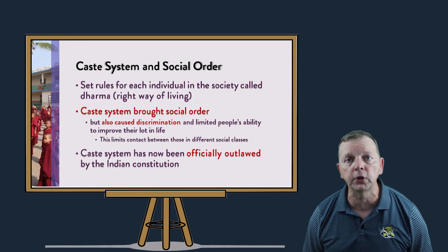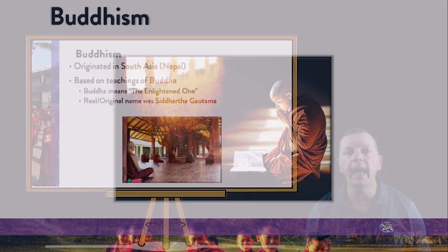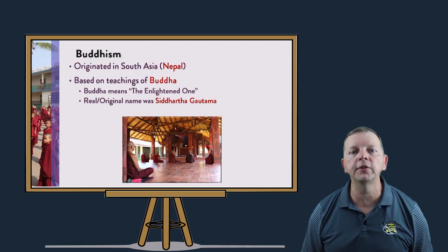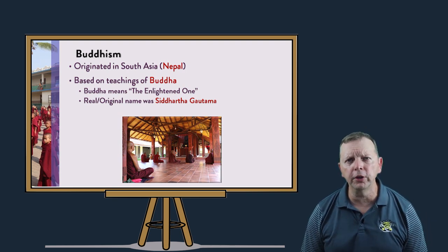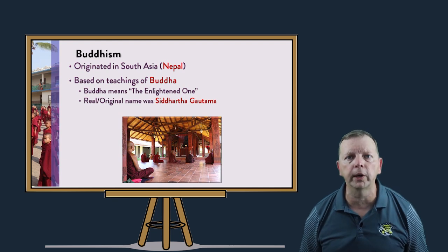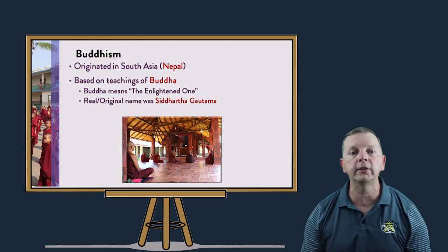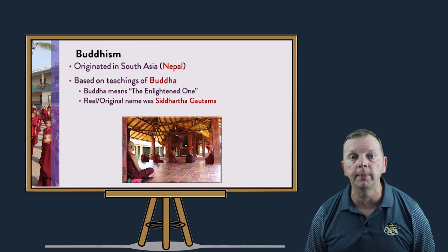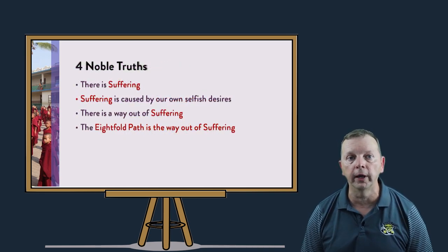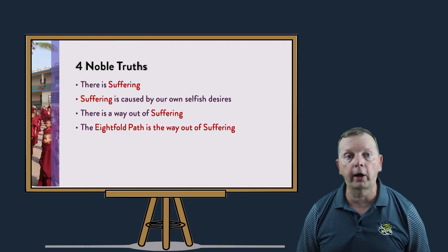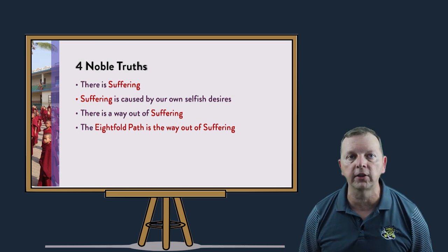The second Dharmic religion is Buddhism, which began in Nepal. Buddhism is based upon the teachings of Siddhartha Gautama, the Buddha, or the Enlightened One. Siddhartha Gautama was a prince who one day left his palace walls and was horrified by what he saw — poverty, illness, and death. In other words, he saw suffering. So he went to meditate for a long time, trying to find a way to escape suffering. This led him to the four noble truths. The first noble truth is that there is suffering. The second is that suffering is caused by our own selfish desire. The third is that there is a way out of suffering. And the eightfold path is the way out of that suffering.